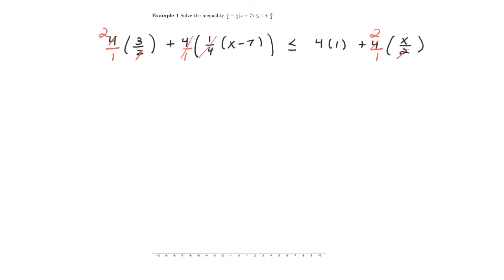So I'm just going to multiply across now where we have 2 times 3, which is 6. I'm left with just x minus 7. And that's less than or equal to 4 plus 2x.